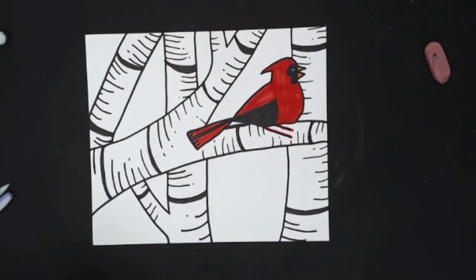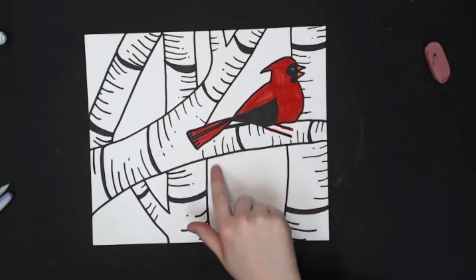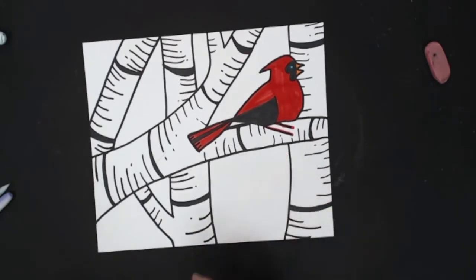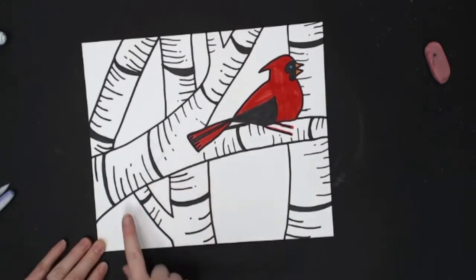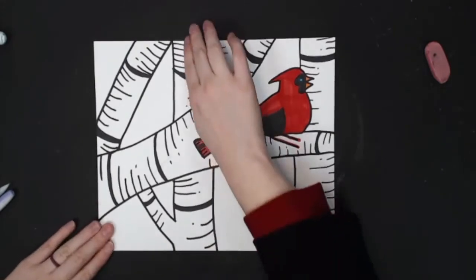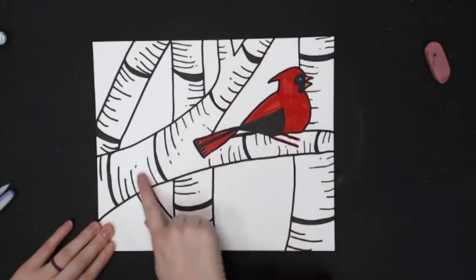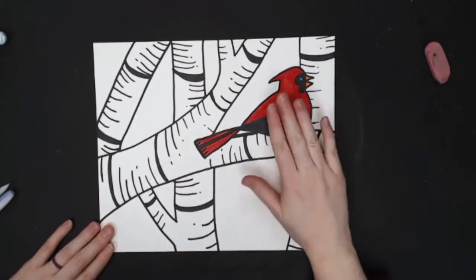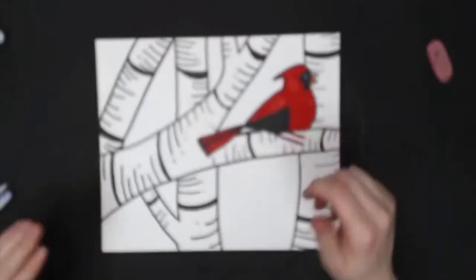Alright, so we're going to work on our negative space. So if you remember, our negative space is the area behind the trees. So like this area is our negative space. What is not our negative space is our positive space. And that would be our actual tree trunks of our birch tree and branches, as well as our cardinal.